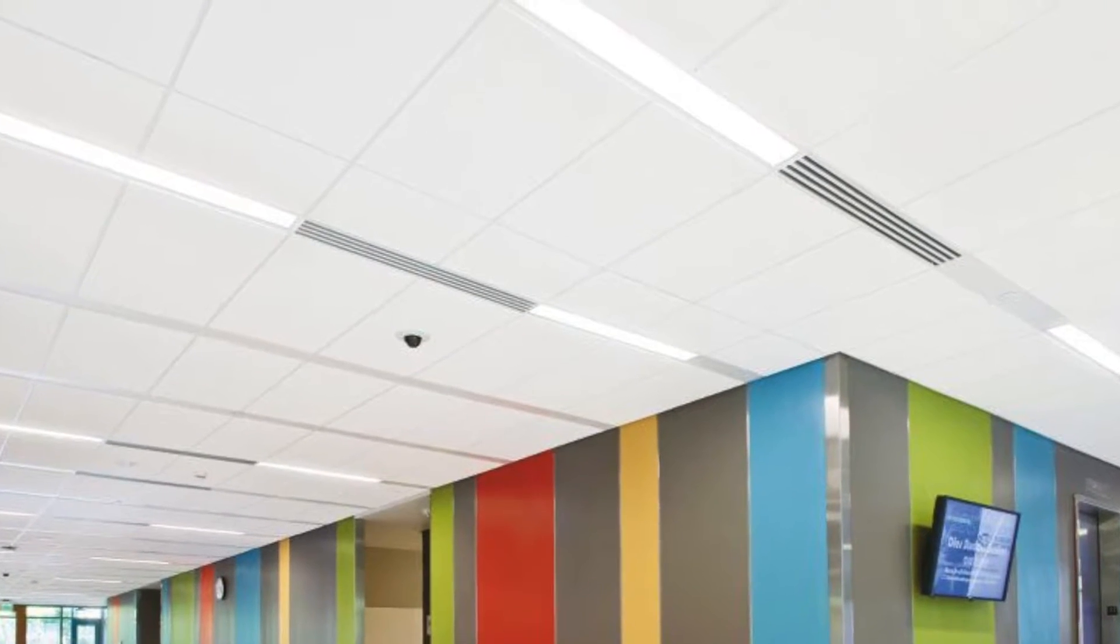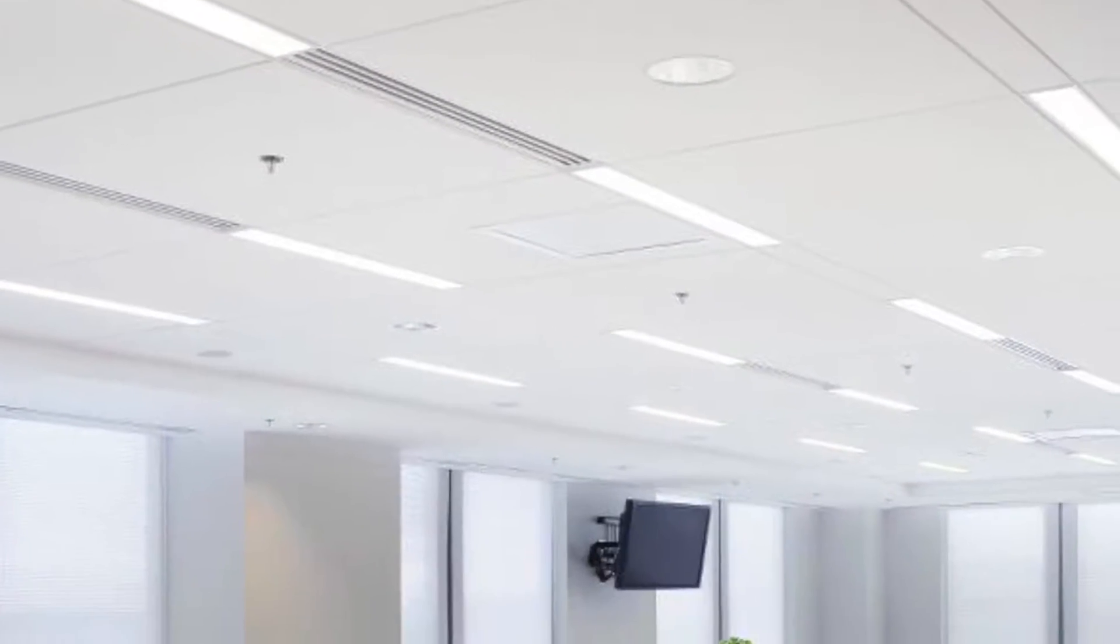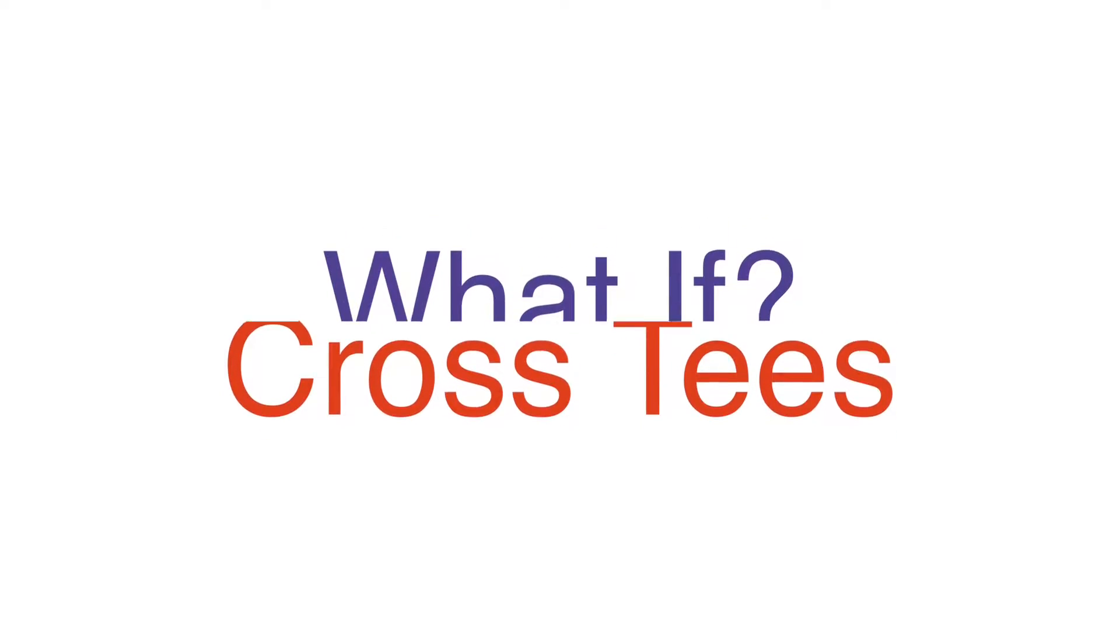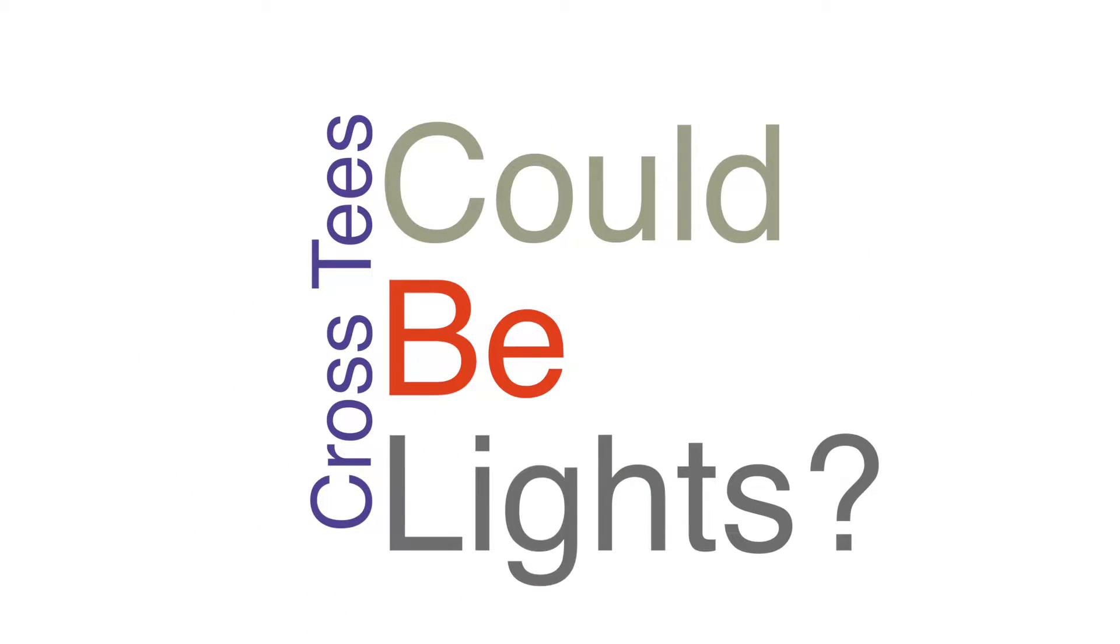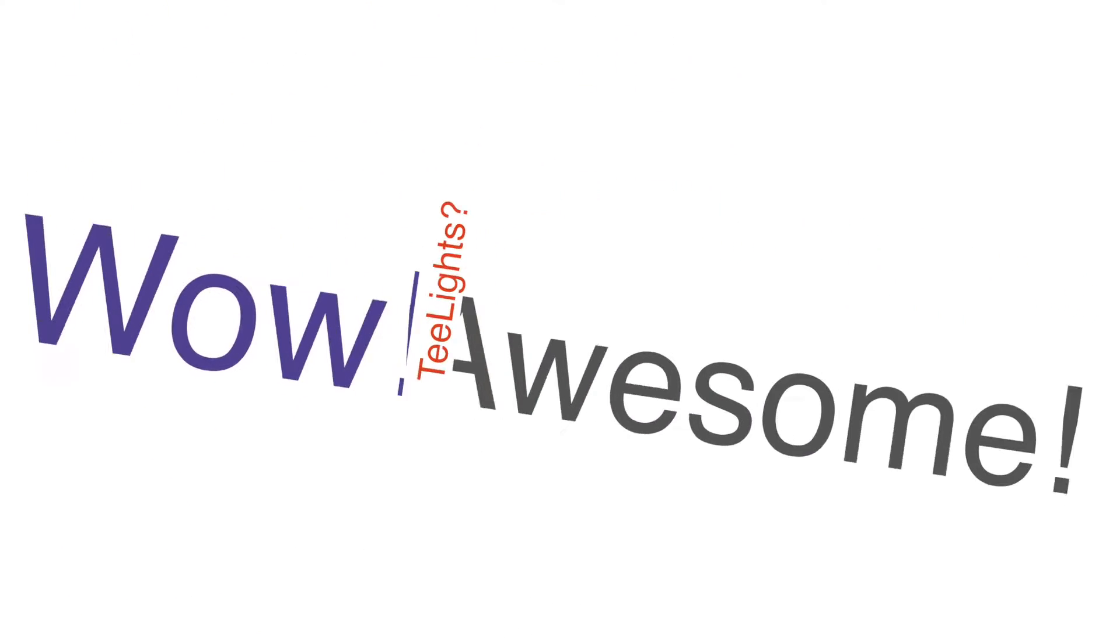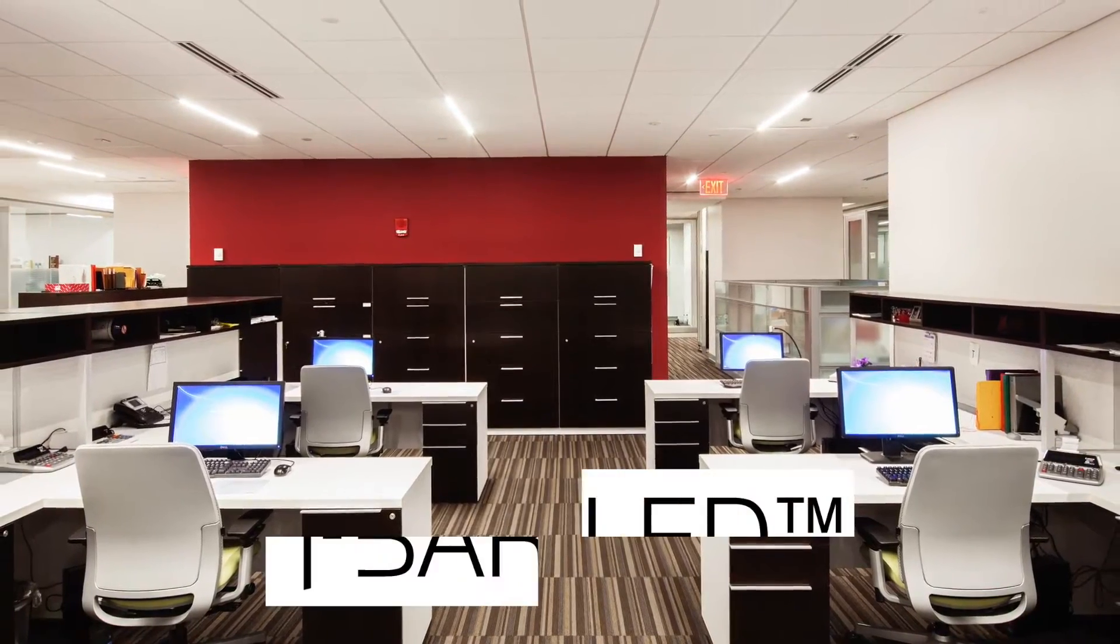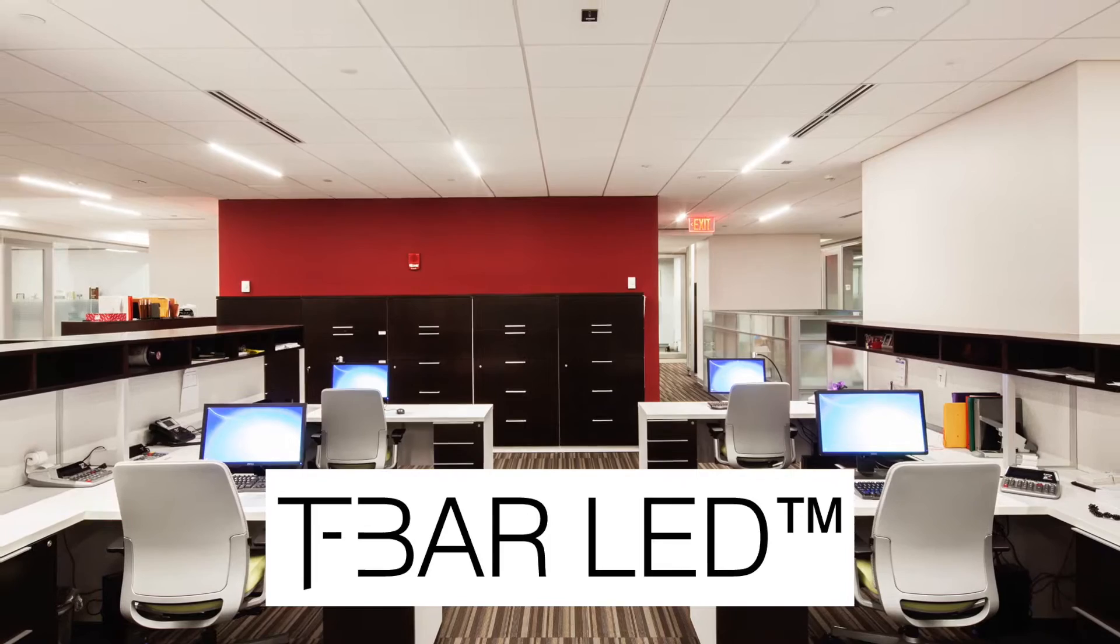4-inch linear lighting has become so popular because it simplifies the ceiling plane with its minimalistic design. What if it was possible to shrink lighting down to one inch or even a half inch wide? What if the actual cross T could be turned into a light? Check out these new T-Bar LED smart lights from JLC Tech.